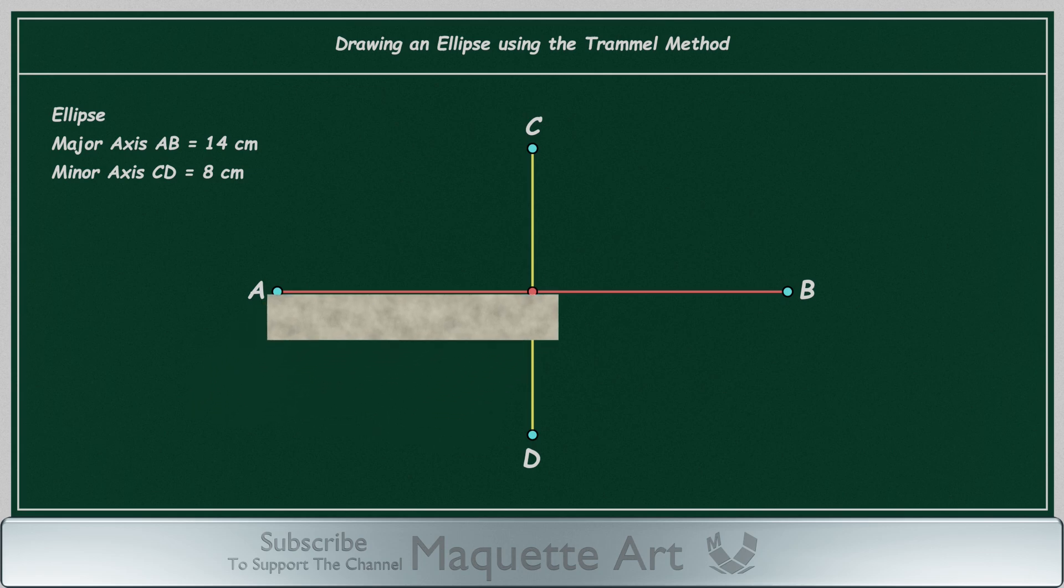Now align the edge of the paper to the major axis. Then at point A, add a mark on the paper. We will name this mark P for points. Now, without moving the paper, add another mark at the minor axis position. Name this mark minor.